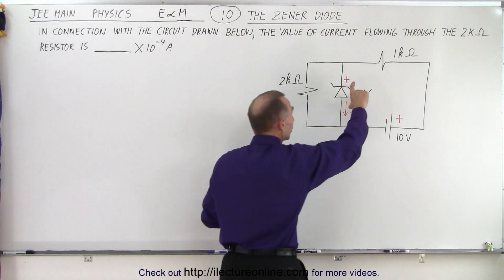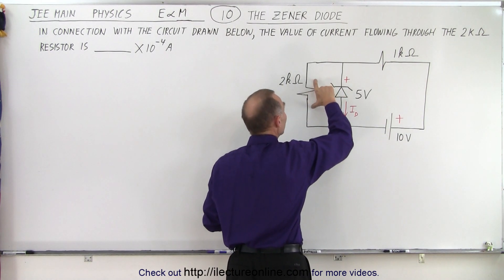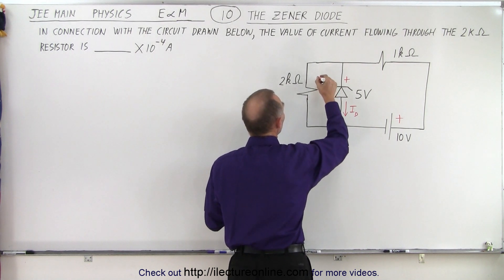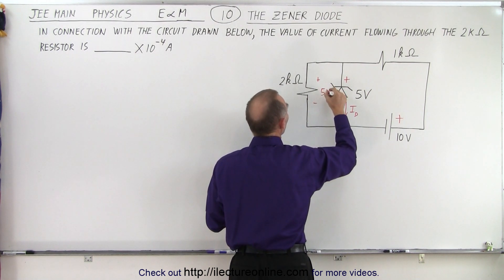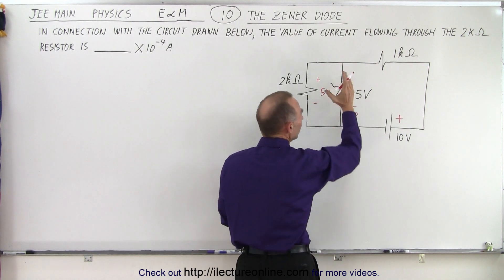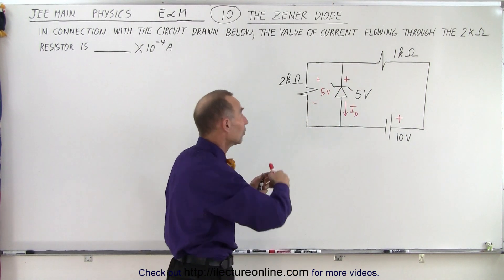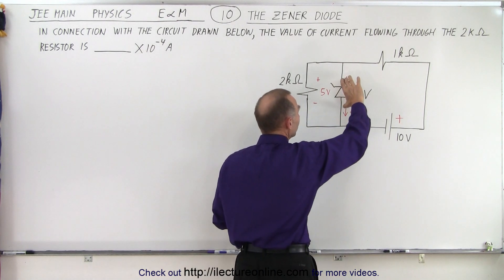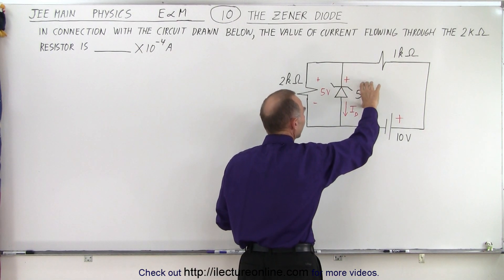Since the Zener diode is connected in parallel to this resistor, that means this resistor will also have 5 volts across it. That's how you determine that—by understanding how the Zener diode works. You build up a voltage, and as soon as the voltage builds up to the rated voltage of 5 volts for the Zener diode, that's when current will begin to flow.